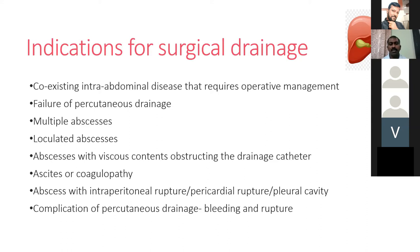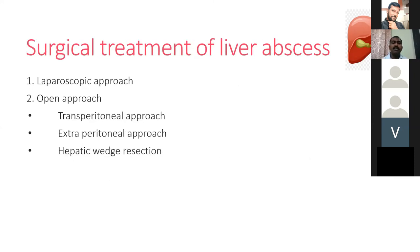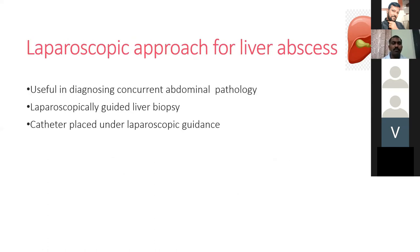Additional indications for surgical drainage include: abscess with intraperitoneal, pericardial, or pleural cavity rupture; complications following percutaneous drainage such as bleeding or rupture. Surgical options include laparoscopic or open approach. Laparoscopic approach allows simultaneous management of intra-abdominal pathology, laparoscopic-guided liver biopsy in suspected metastatic necrotic abscess, or catheter placement under laparoscopic guidance.